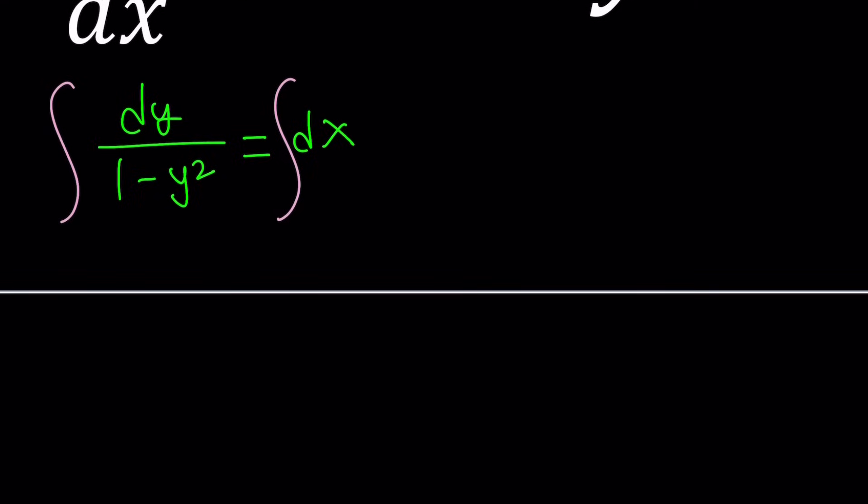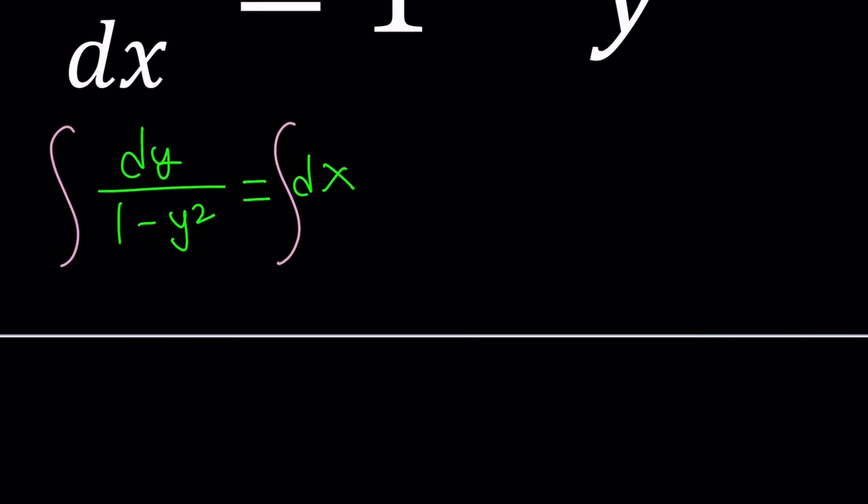And 1 over 1 minus y squared, how do you integrate it? There's a couple ways to go about it. Let me show you both. The first method would be my favorite, the trigonometric substitution. So you can replace y with something like sine theta, because what would happen is 1 minus sine squared is going to give you cosine squared, which is good because we'll have some trigonometric transformations.